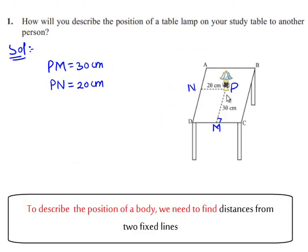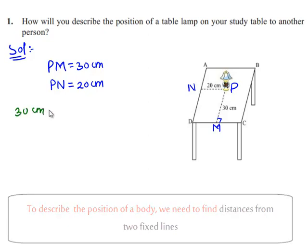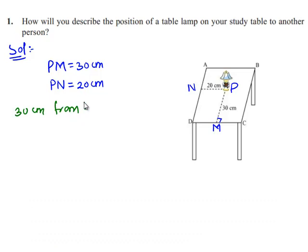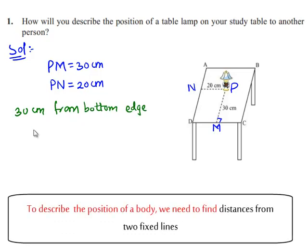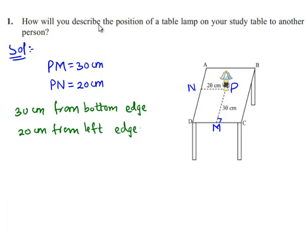We can say that the table lamp is situated at a distance of 30 cm from the bottom edge and also 20 cm from the left edge, and in this way we can describe the position of the table lamp on the study table to another person.